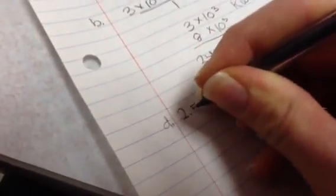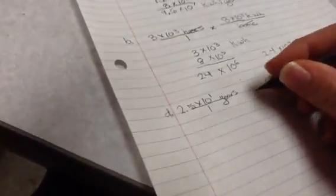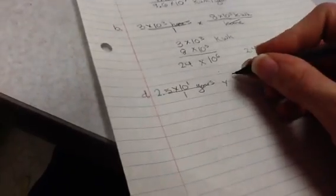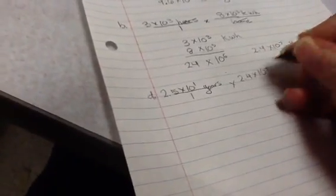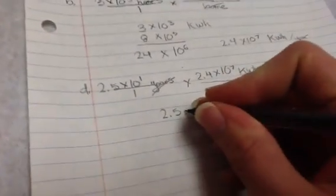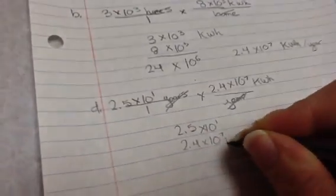So, I have 25 years, which is 2.5 times 10 to the first, and that's years, and I'm just going to put that over 1, and then I have this much kilowatt hours needed a year. So, 2.4 times 10 to the 7th kilowatt hours over a year. So, years cancels, and I'm left with kilowatt hours. So, let me go ahead and multiply. 2.5 times 10 to the 1st, and then 2.4 times 10 to the 7th, and this is going to be kilowatt hours.